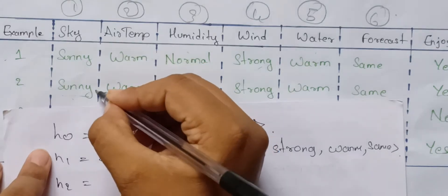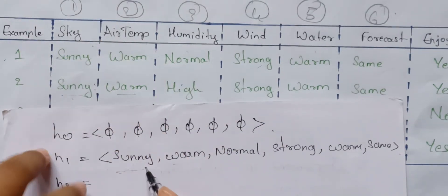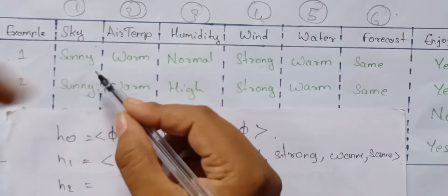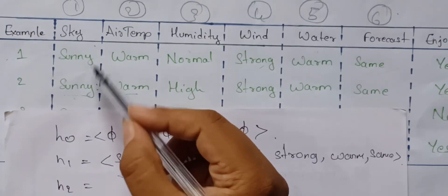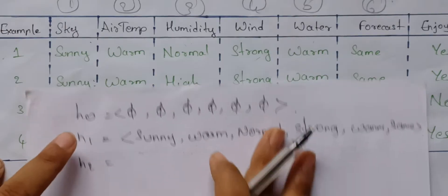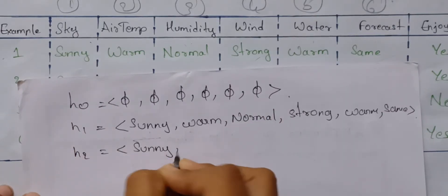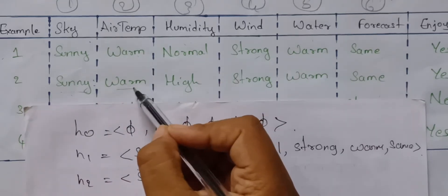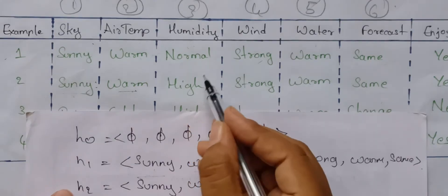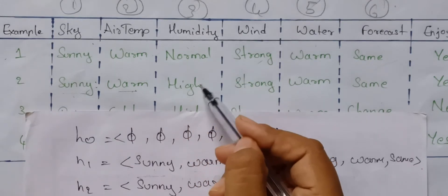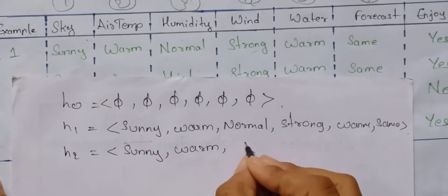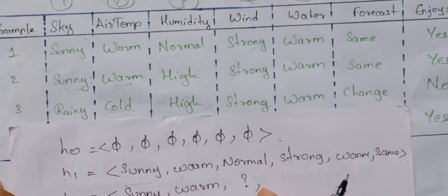Now comparing H1 and H2: sunny and sunny — same values, no change. Warm and warm — same values, no change, right as it is. Normal versus high — there is a change in value, values are different. Replace with the most general hypothesis: question mark. Because the values are normal and high, we replace with question mark.